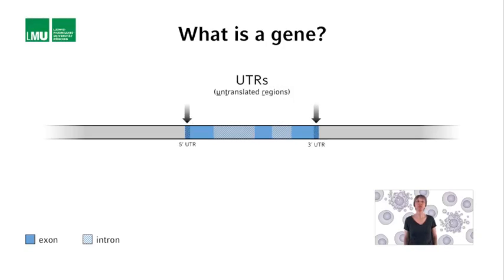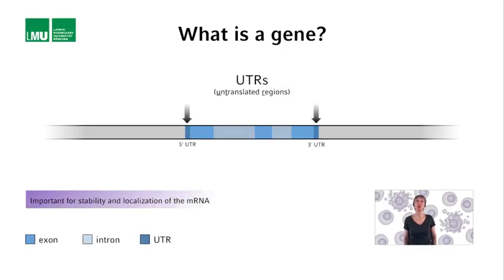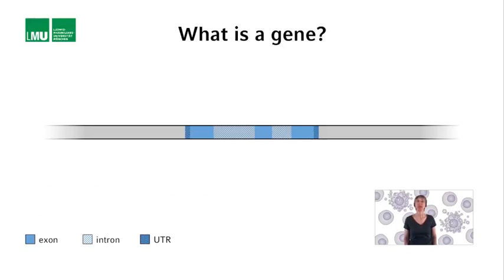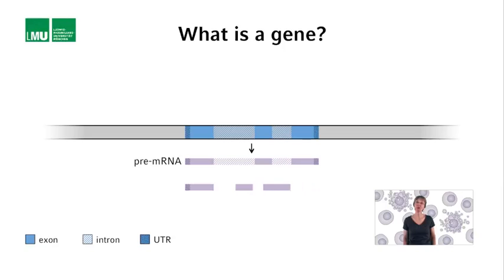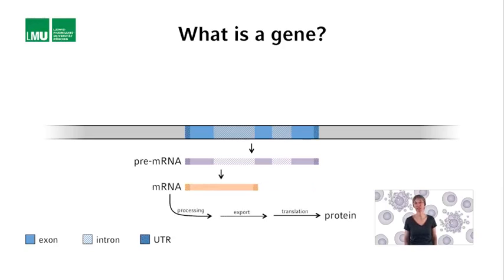Finally, untranslated regions (UTRs) are found at both ends of the transcription unit — the 5' and the 3' end. UTRs are part of the 5'-most exons and they are not coding, but they are important for the stability and localization of the mRNA. The initially formed RNA, called pre-mRNA, is then processed into mature mRNA, which is exported from the nucleus into the cytoplasm, where ribosomes use the mRNA to synthesize a protein of a specific sequence.